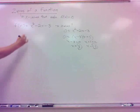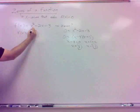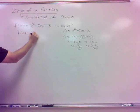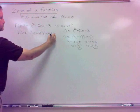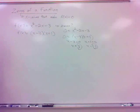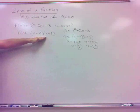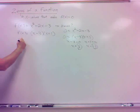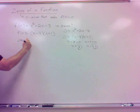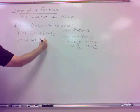Let me rewrite this for purposes of where I'm going. If I rewrite this f of x function in its factored form, I can write it as x plus 3 times x minus 1, and the zeros were 3 and negative 1.